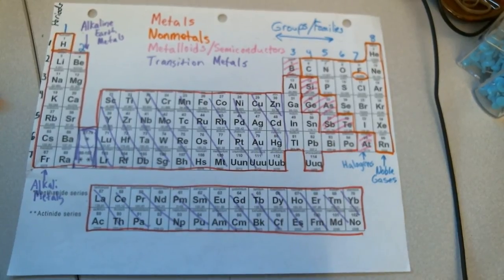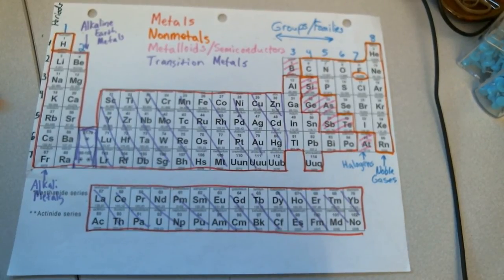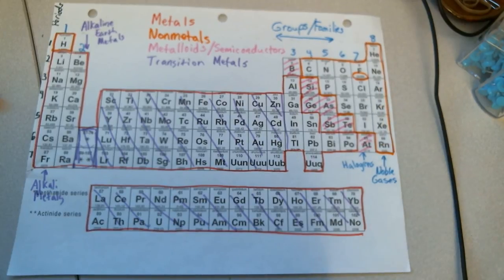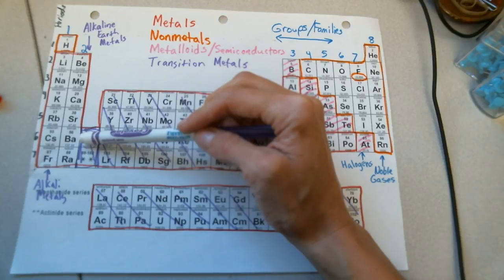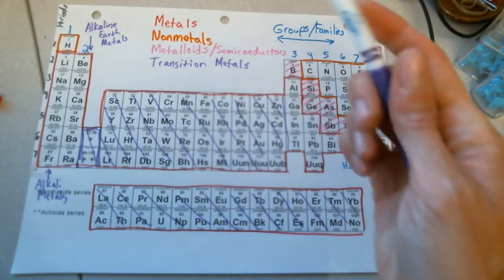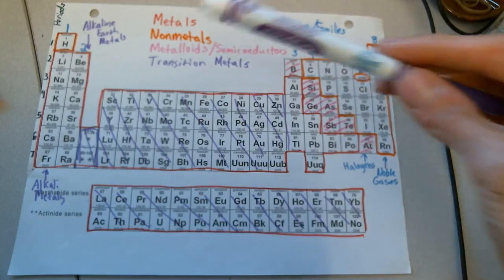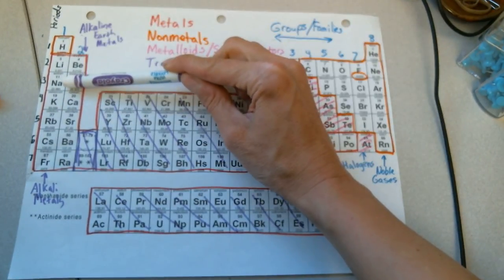I'd like you to practice what special group do each of these belong to. Start with bromine, Br. What special group is bromine in? Yes, bromine is in the halogens. How about argon, Ar? Yes, argon is a noble gas. Next let's look at barium, Ba. Ba is an alkaline earth metal. And lastly let's look at sodium, Na. Yes, sodium is an alkali metal.